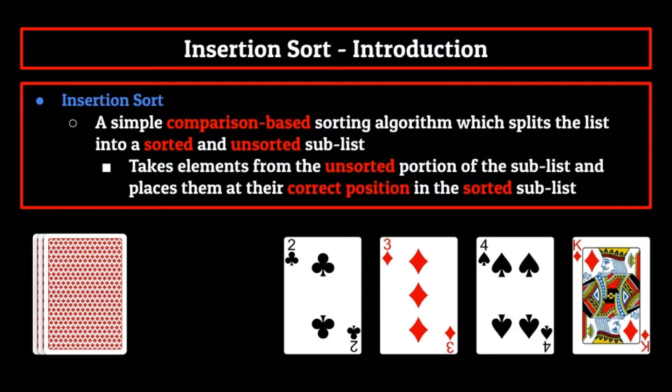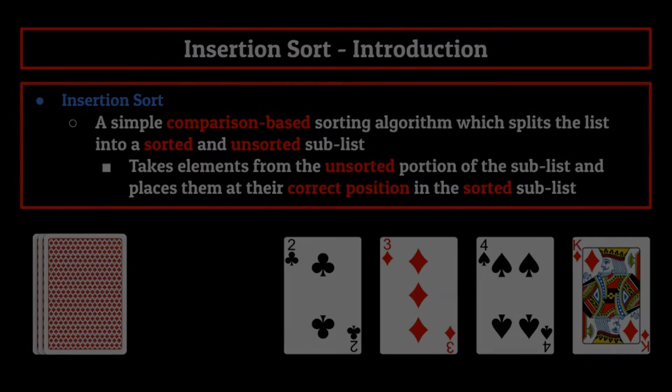That's pretty much the main idea behind insertion sort. We take an element from the unsorted part of the list and slot it in where it belongs in the sorted part of the list. Of course, saying one thing is easier than actually doing it. And to actually do it, we need pseudocode.